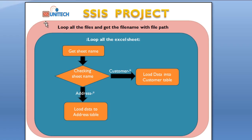Here is the logic: first, we use a loop to iterate through all the files in a folder, returning the file name along with the file path. Then we use a second loop to iterate through all the Excel sheets inside each workbook. We get the sheet name — if it contains 'customer,' load into the customer table; if it contains 'address,' load into the address table. For the address table, we first check the country table and load country data if not already present.